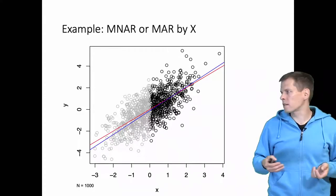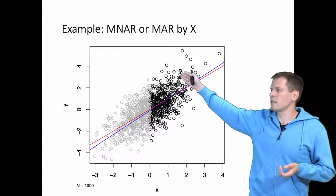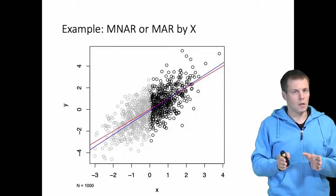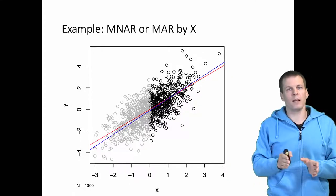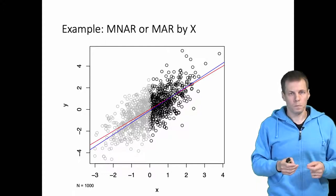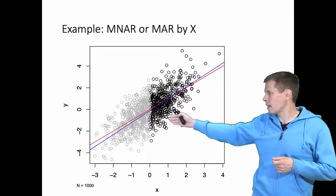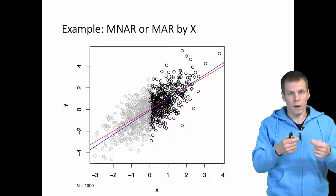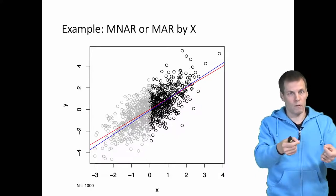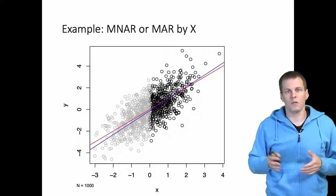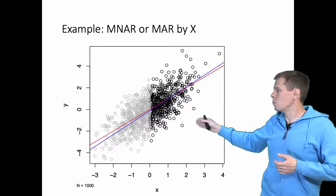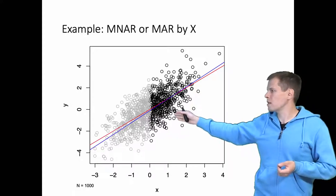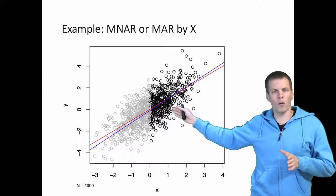What will happen when some of these data are missing? If the data are missing on x, we drop both x and y for those cases. We don't know whether this is missing not at random or missing at random, because we are dropping both x and y where there is missingness. We drop all cases where x is less than 0, so there is systematic missingness with respect to x.